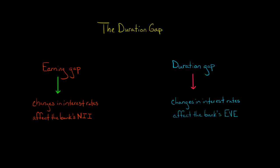Part of asset liability management is reducing the earning gap so the changes in interest rates don't wreak havoc on a bank's net interest income. But a bank also wants to reduce its duration gap so the changes in interest rates don't reduce the economic value of the bank's equity.